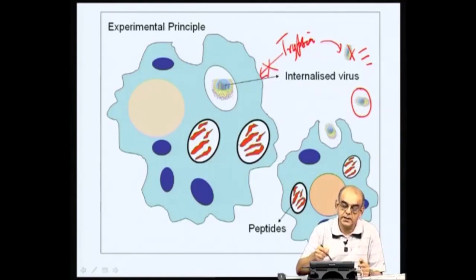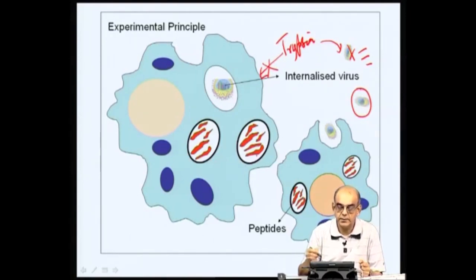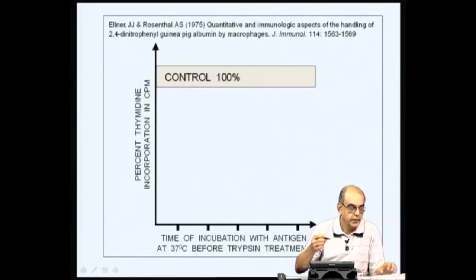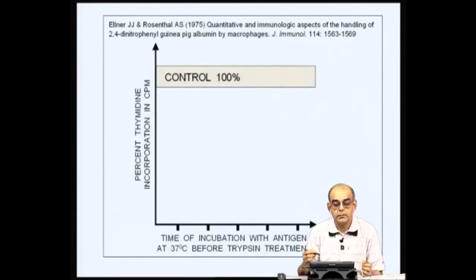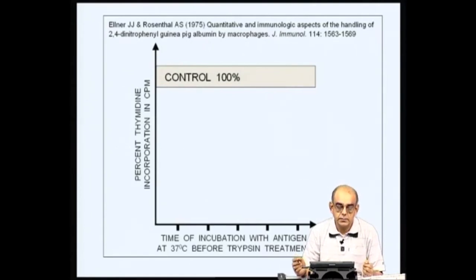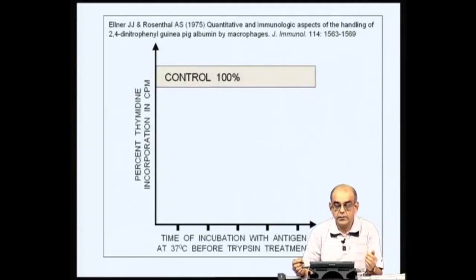The antigen presenting cell also clips antigens into smaller peptides available inside the macrophage, and what happens to these clipped fragments determines T cell activation. Let us see what happened in the experiment done by Elner and Rosenthal in 1975. They used macrophages isolated from guinea pigs immunized with antigens such as guinea pig albumin, KLH, or, more importantly for this experiment, purified protein derivative (PPD) derived from mycobacteria.